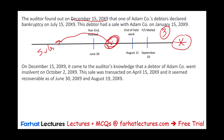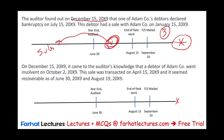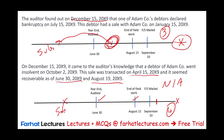Scenario 2: On December 15th, the auditor learns that a debtor of Adam Company went insolvent on October 1st, which is in the subsequent discovery period. The sale was transacted on April 15th, and the account appeared recoverable as of June 30th as well as August 15th — everything looked good. No action is needed here. This write-off will be applicable to the following audit year, but for this year, Option 4 applies: no action required.